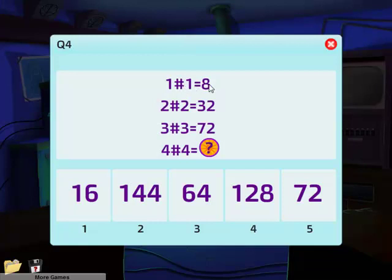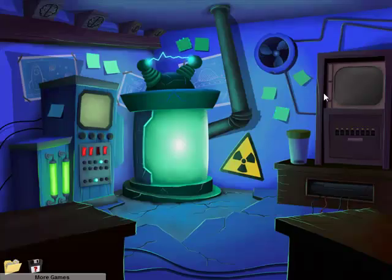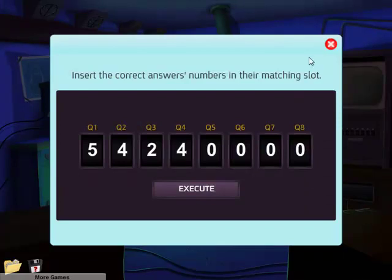1 plus 1 equals 8. 2 plus 2 equals 32. 3, 3. I believe this one here. If you multiply these two numbers together and then multiply this result by 8, you get this here. So 1 times 1 equals 1, multiplied by 8, you get 8. 2 times 2 equals 4, multiplied that by 8, you get 32. 3 times 3 equals 9, multiplied that by 8, you get 72 of course. So 4 times 4 equals 16. 16 multiplied by 8 equals 128. So the answer is 4. There we go.